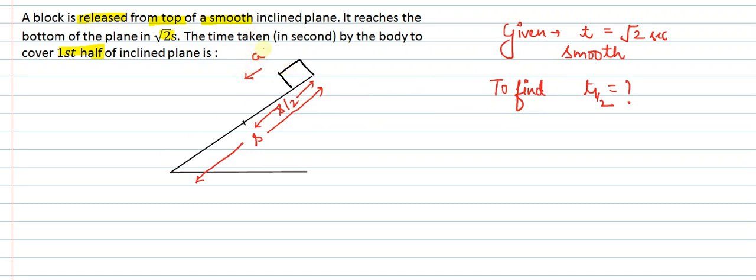This block will come down with constant acceleration a. So we can write the equation: s equals ut plus half at squared. Because this block is released from rest, u is zero, so we will get s equals half at squared.